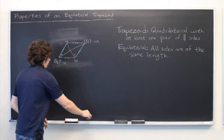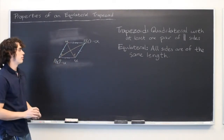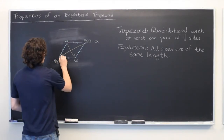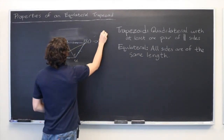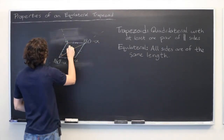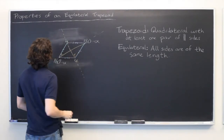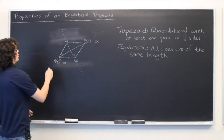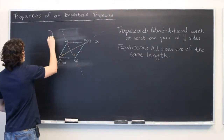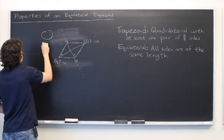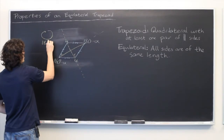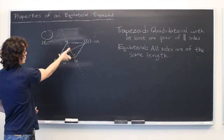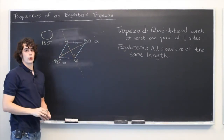Finally, let's talk about some of the symmetries of an equilateral trapezoid. First, there are axes of symmetry along both of the diagonals. But more interestingly, the shape also has rotational symmetry of 180 degrees, meaning that if you take the shape and rotate it 180 degrees, you'll get exactly the same shape again in the same orientation.